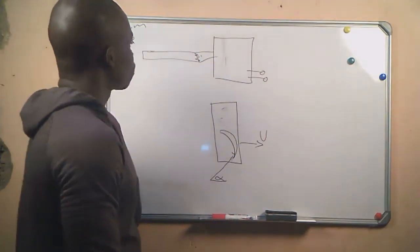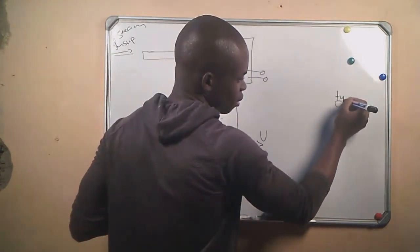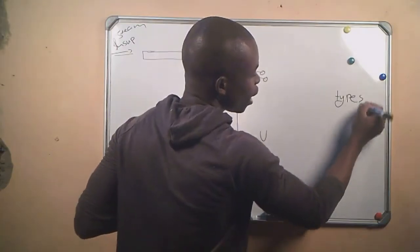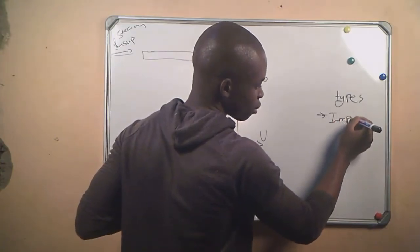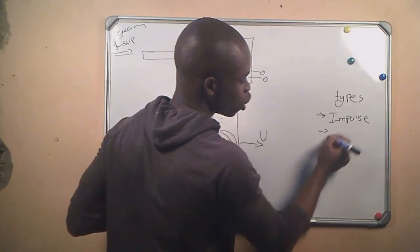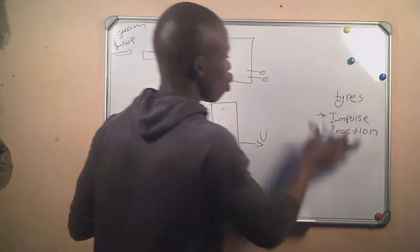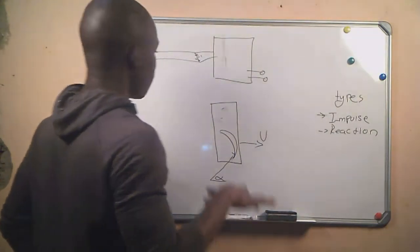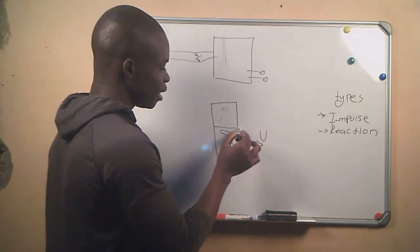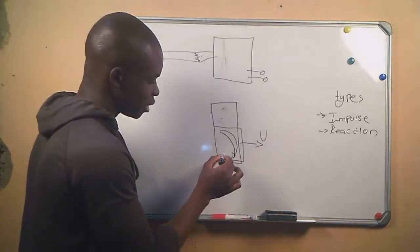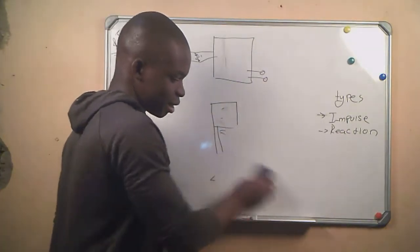So we have two types of turbine: number one, an impulse turbine, and number two, a reaction turbine. We will come to that in a moment, but in this chapter we are more interested in the blade — so we will take the blade out and write it separately.